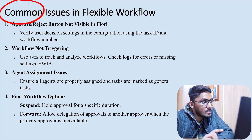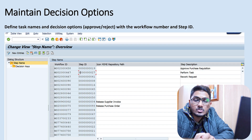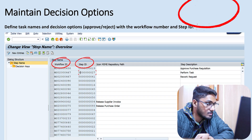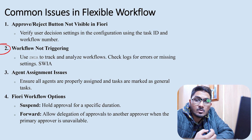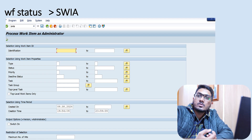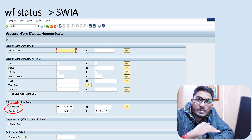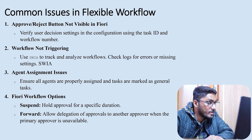These are some common issues in flexible workflow. First: Approve/Reject buttons are not visible in Fiori — this is because you have not maintained the user decision options where the workflow number and task ID need to be added. Second: workflow not triggering — even after doing all configurations, if the workflow is still not triggering, use T-code SWIA. In SWIA, you can enter the task ID, document number, or date to get a list of all workflows and check the logs.